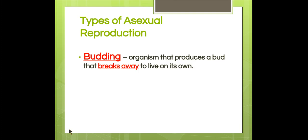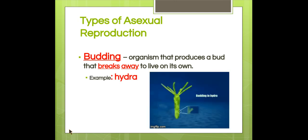The third type is budding. Budding is where an organism produces a bud that breaks away to live on its own.